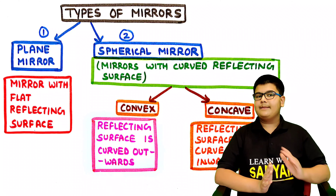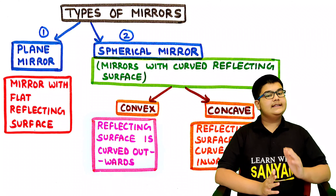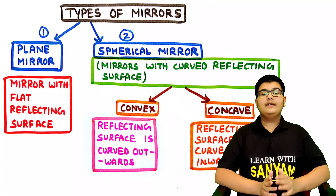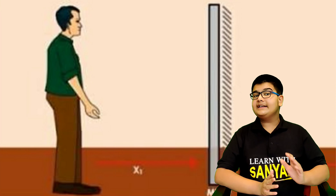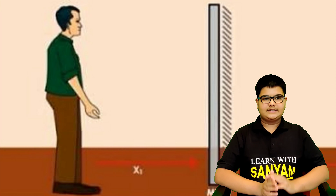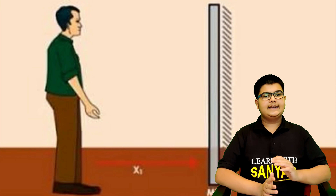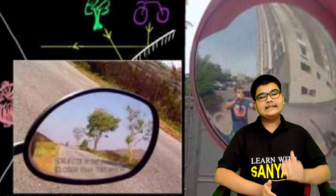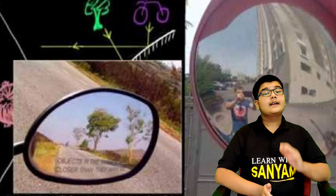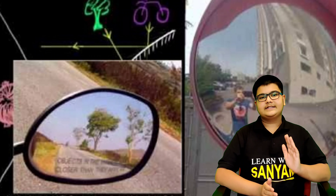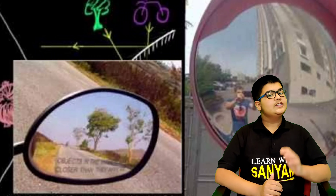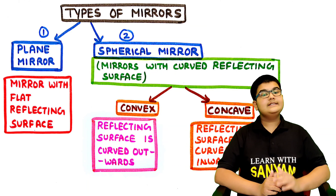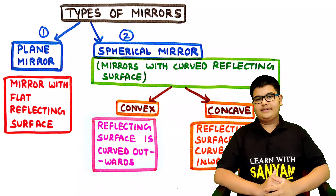Now let's discuss the different types of mirrors we will study in this chapter. First, plane mirror — this is the mirror with a flat reflecting surface. Second, spherical mirror — these are mirrors with a curved reflecting surface. So first let's discuss the plane mirror.